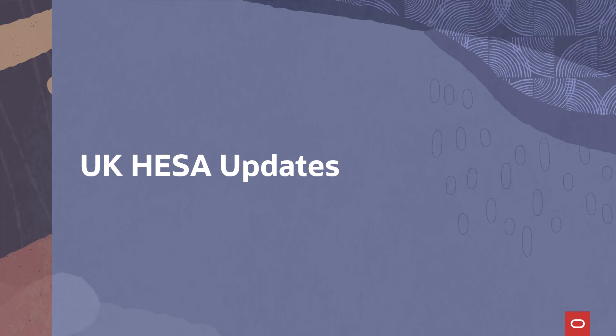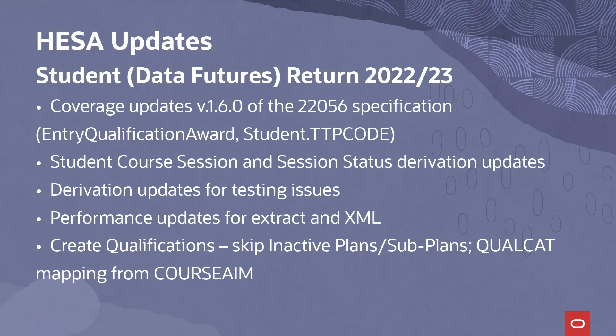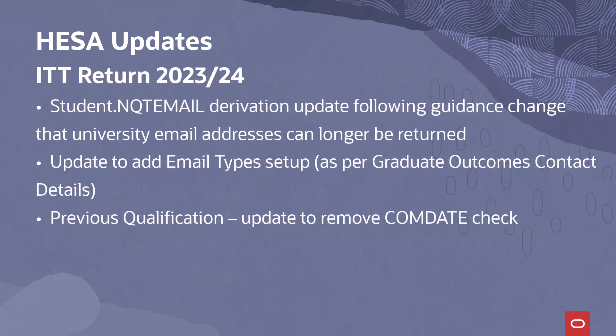For our UK institutions, we have HESA updates. These include updates to support the first student data futures return, with coverage changes up to and including version 1.6.0 of the specification. Updates to support the ITT return for 2023-24, including changes to the email derivation to allow institutions to exclude university email addresses.